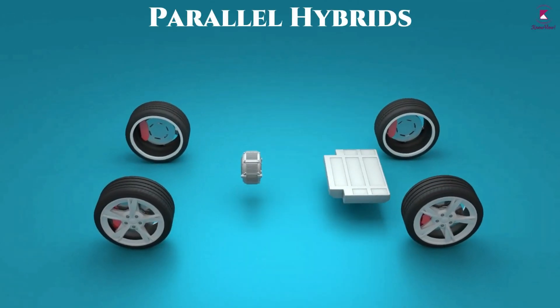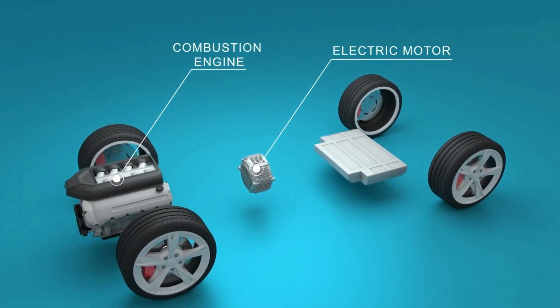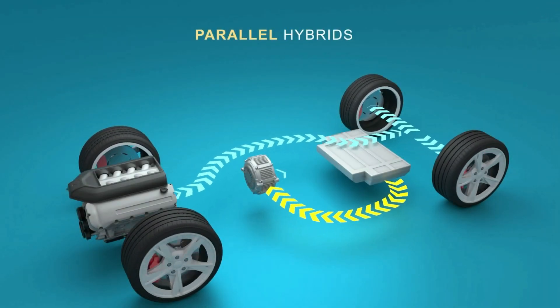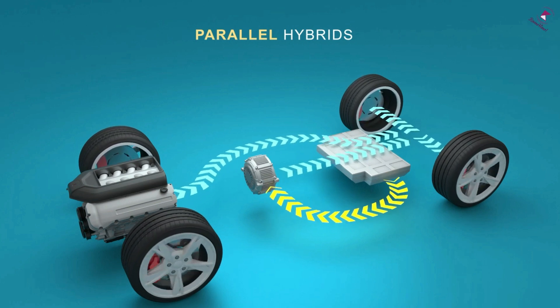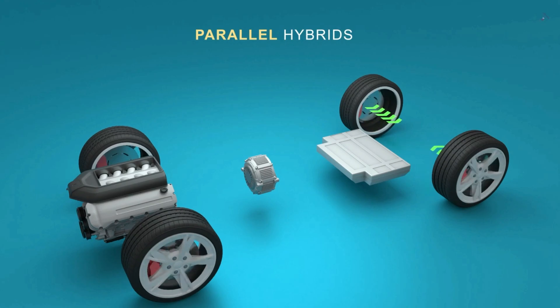Parallel hybrids are the most common sort of full hybrid, which combine the power of an electric motor and a gasoline engine through a single transmission. The cars are either directly powered by a gas engine, by an electric motor, or by a combination of both.